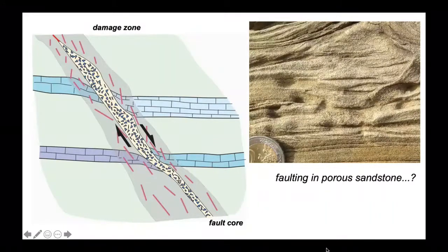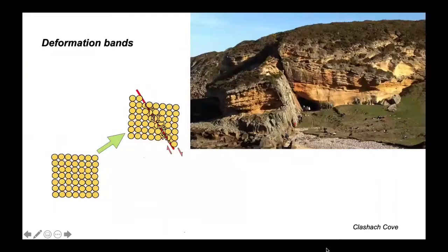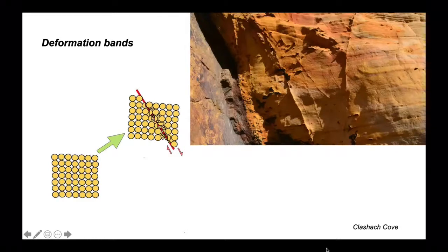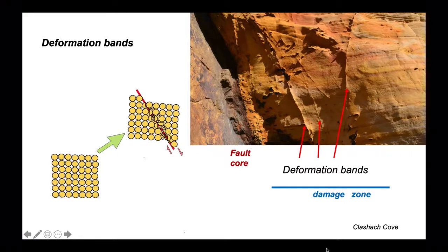When we look at faulting in porous materials, such as porous sandstones, we get a slightly different type of material behaviour. A great example is here on the Moray coast in some dune sandstone. The way in which this porous material deforms is through features called deformation bands, which are micro-faults. Close up, we can see these little seams running through the outcrop — little micro-faults called deformation bands — right adjacent to the main fault core, where again you have a gouge and highly smashed-up grains.